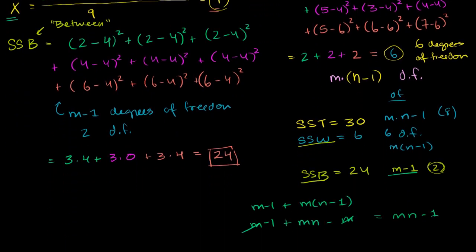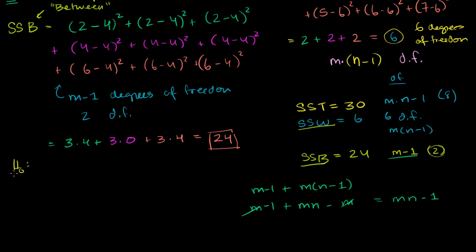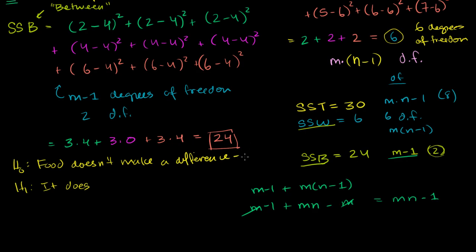Let's do a hypothesis test. My null hypothesis is that the means are the same — food doesn't make a difference — and my alternate hypothesis is that it does. Quantitatively, under the null hypothesis, the true population mean of the group that took food 1 equals food 2 equals food 3. Under the alternate hypothesis, these means will not all be the same. We assume the null hypothesis, as we always do in hypothesis testing.